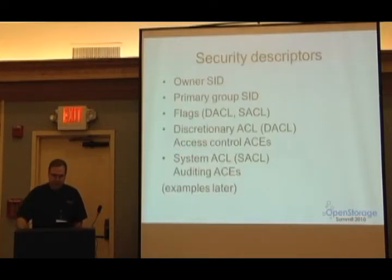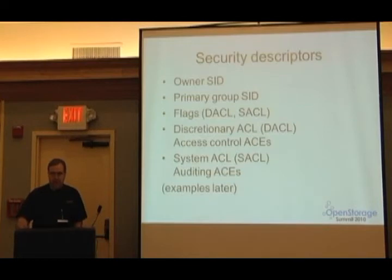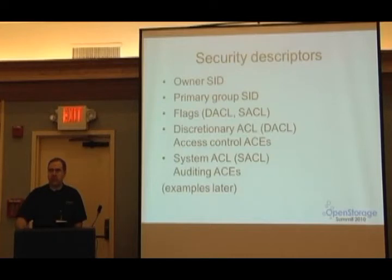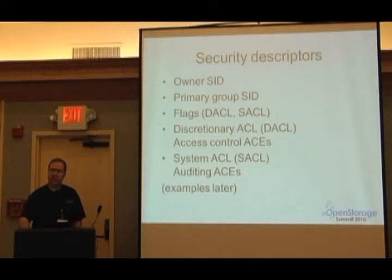Coming to security descriptors — they contain all the information you need to decide whether somebody has access to an object. More than that, they also hold information such that if it's a directory and you're creating an object in it, they define what security descriptor should be derived for the new object. That's what the ACL and SACL inheritance flags are for. The system ACL controls auditing — it's an interesting feature, though I don't find people widely use it, and our support for it is embryonic at best. If people ask for it, perhaps we'll do more.